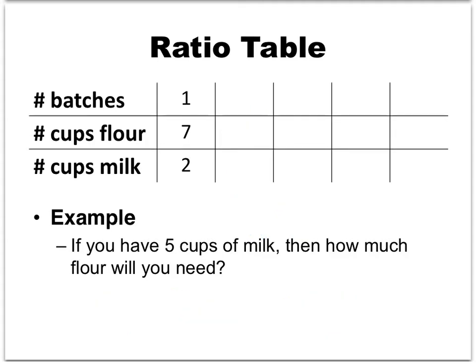Another variation: suppose now we have 5 cups of milk. There's no whole number we can multiply 2 by to get 5, so let's use a trick — let's put a 1 in the bottom row instead. To go from 2 to 1, we multiply by one half, giving us 7 halves for flour and one half for milk. Now to go from 1 to 5, we multiply by 5: 7 halves times 5 is 35 halves, and one half times 5 is 5 halves.